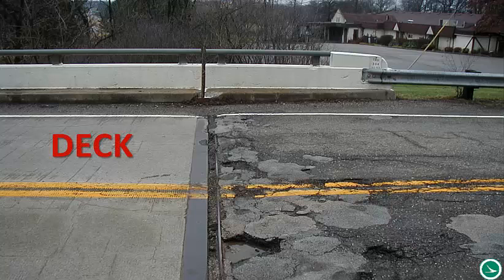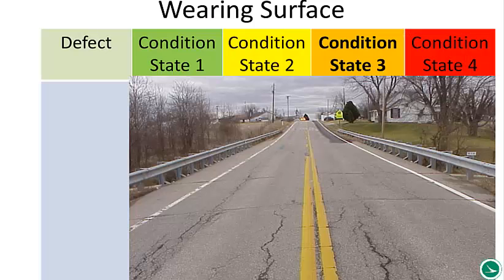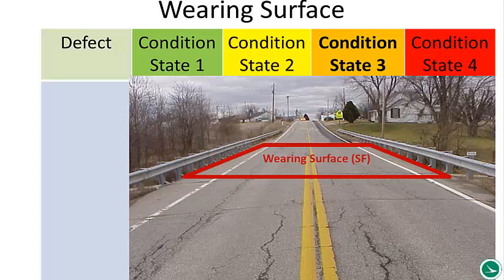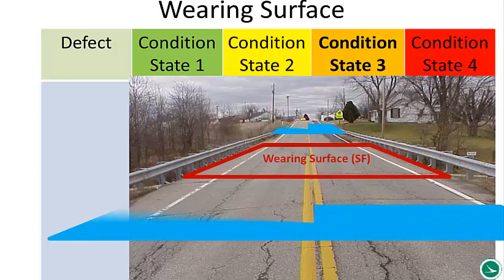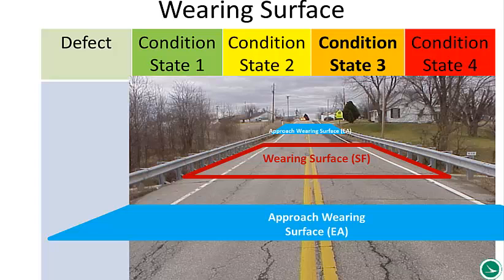To clarify, our deck is in this image on the left and our approach items are on the right, clearly delineated at the structural expansion joint. To further clarify, the deck wearing surface is a square footage — it's the portion above the floor carrying traffic — and the approach wearing surface is the portion beyond. In this example, it's beyond the approach slab. If there's no approach slab, then your approach wearing surface begins at the bridge extent and goes a length beyond the bridge.